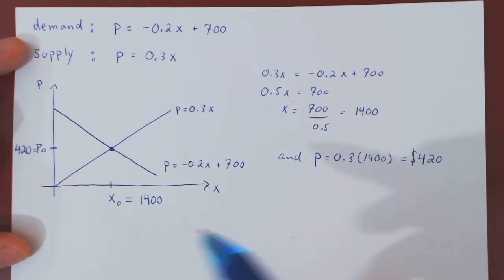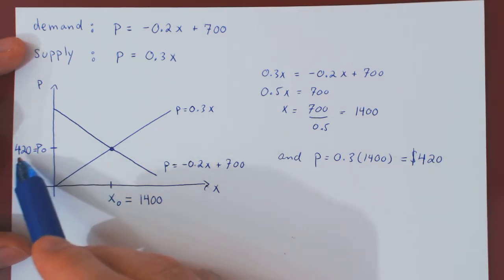And we have the equilibrium point. So the market equilibrium is when the price of a unit is $420, and for this given price,